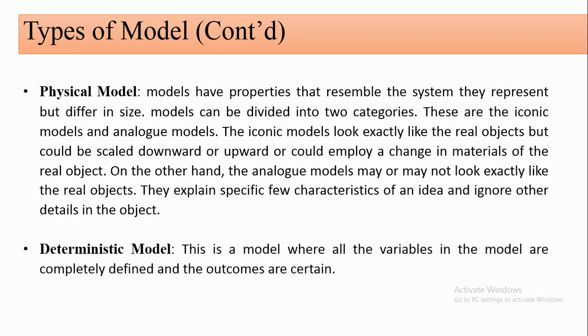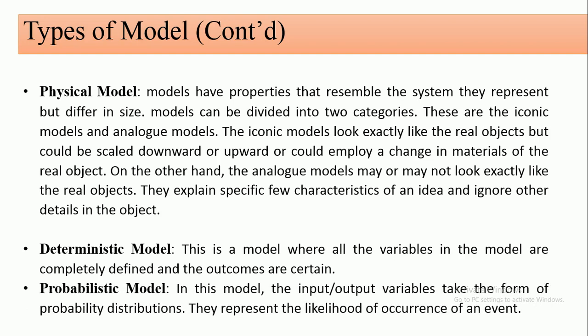We have the deterministic model — from the word 'deterministic.' In this model, all variables are completely defined and the outcomes are certain. Every input and output variable is completely defined. The opposite is the probabilistic model, where inputs and outputs form probability distributions — such as Poisson, normal, or exponential distributions — representing the likelihood of occurrence of an event.